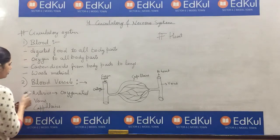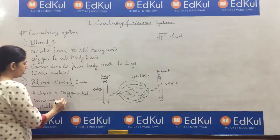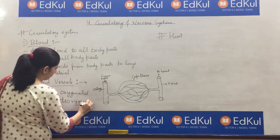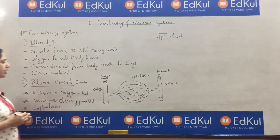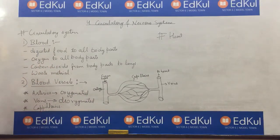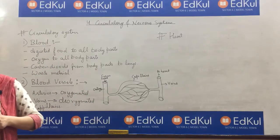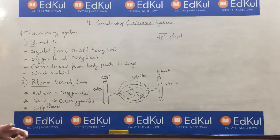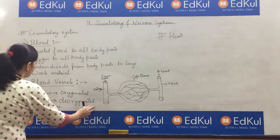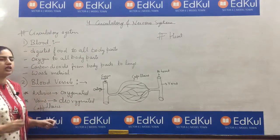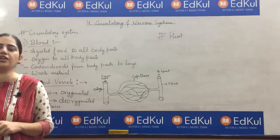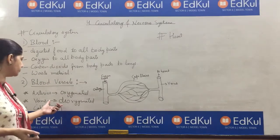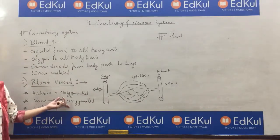Then we have veins. Veins carry deoxygenated blood. What is deoxygenated? Deoxygenated means carbon dioxide-rich blood — that means carbon dioxide-containing blood. Veins carry carbon dioxide-rich or deoxygenated blood from body parts back to the heart.